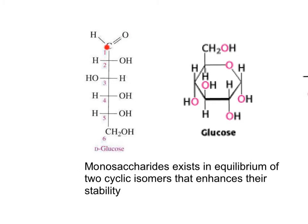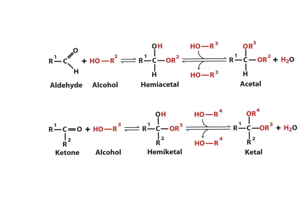Upon reaction between the carbonyl and one of the hydroxyl groups, the molecule of glucose will exist as a mixture of two different isomers. In organic chemistry, we look at the reaction between the family of aldehydes and alcohols in the presence of a hydrochloric acid catalyst to produce an intermediate hemiacetal.